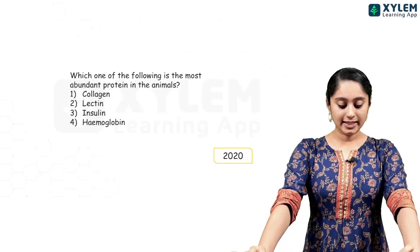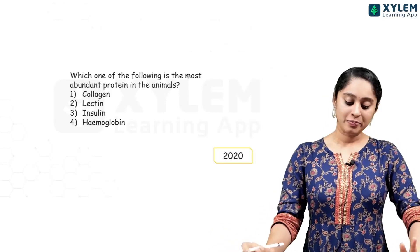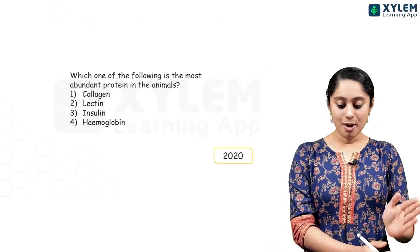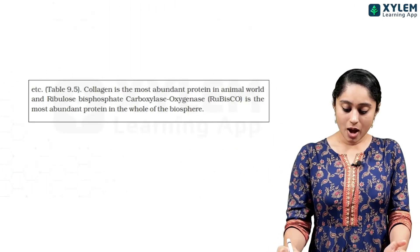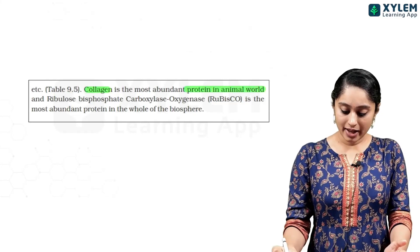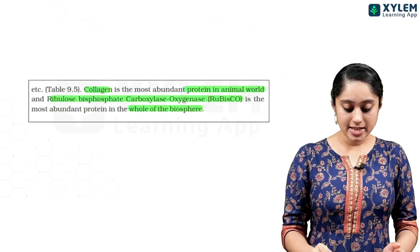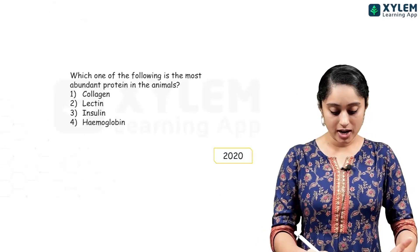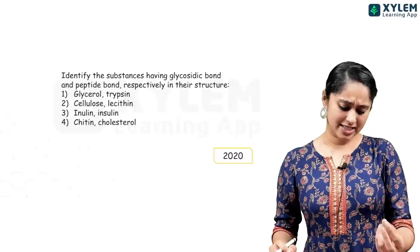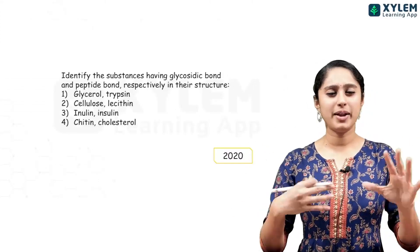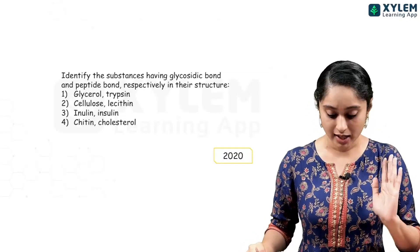From 2020, a direct question: which is the most abundant protein in animals? Your textbook highlights two things — the most abundant protein in animals is collagen, and the most abundant protein in the biosphere is RuBisCO. So collagen is the answer — option 1. This chapter has very direct questions, so knowing your NCERT line by line will definitely get you the correct answer.